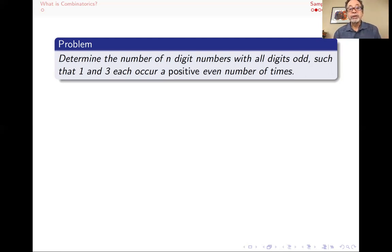Well, even more than that because you want them even number of times. So 1 and 3 have to occur and they have to be even number of 1's and even number of 3's. And then the rest of the digits can be 5's and 7's and 9's. And so the question is how many of those are there?